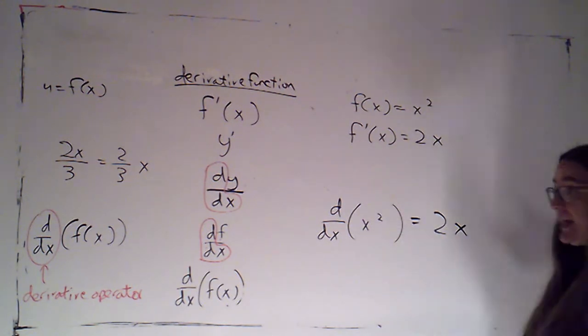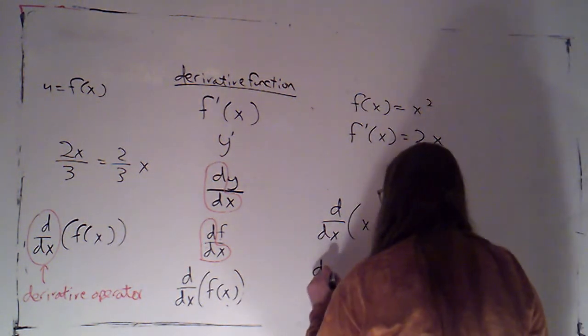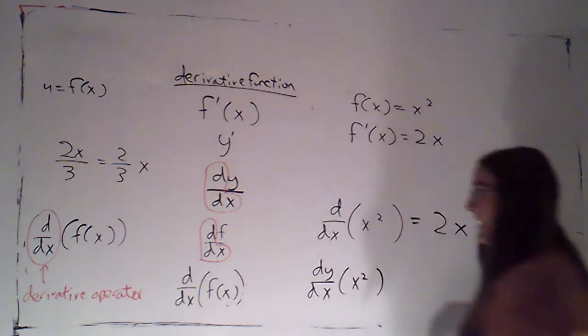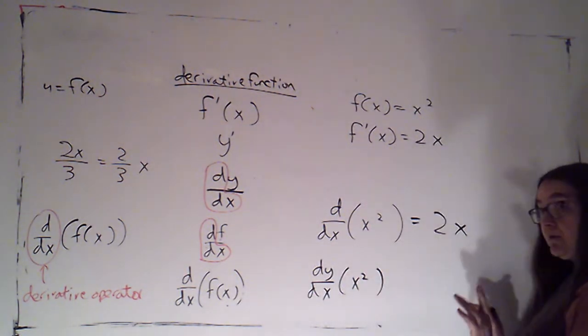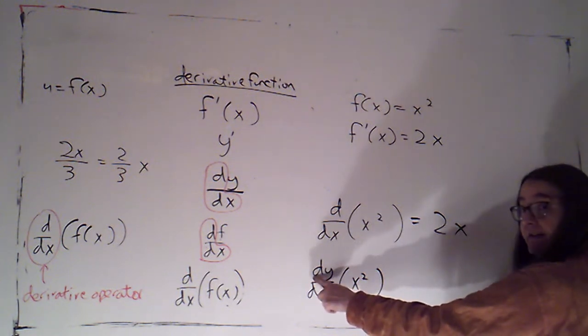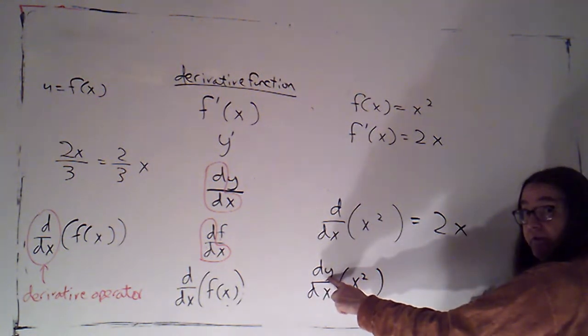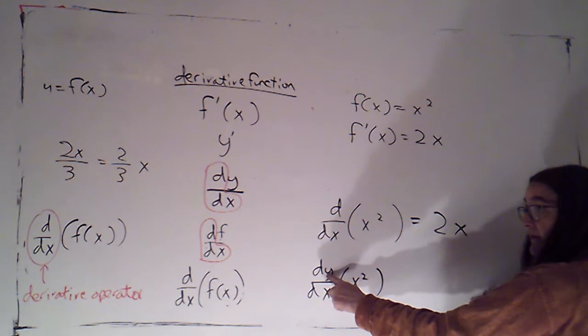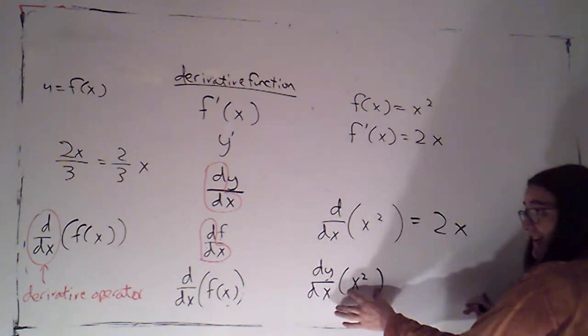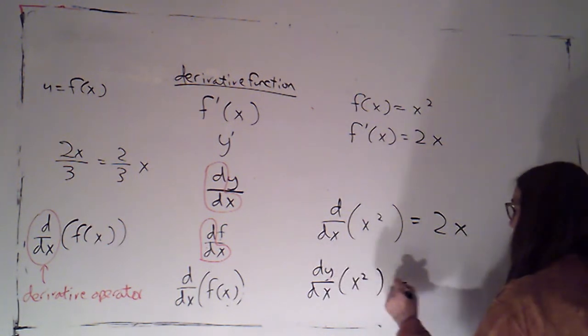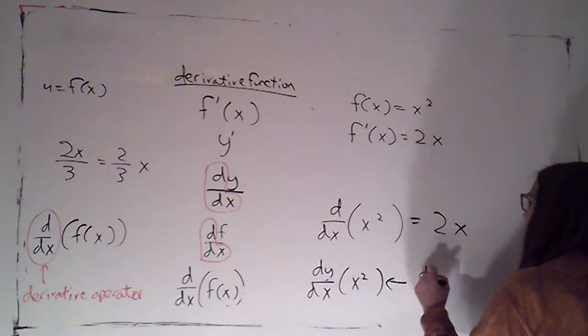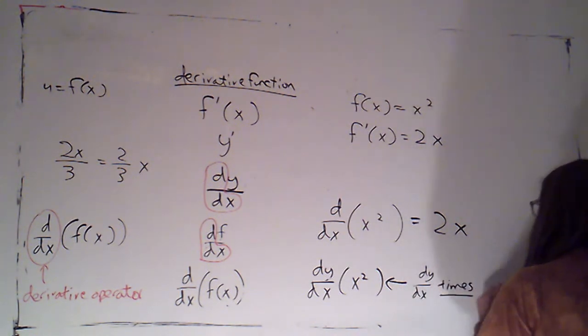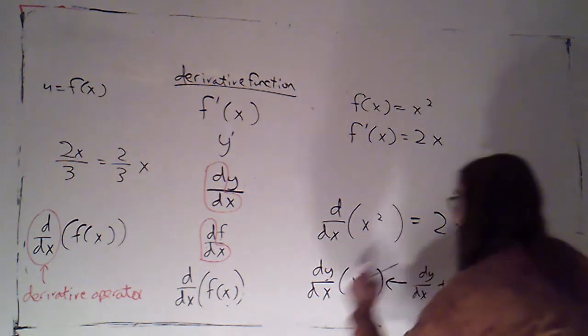One very common notational mistake I see. I'll often see people say dy by dx and then write x squared. Remember, the rule is whatever comes after the d on top is what you're taking the derivative of. So this says I'm taking the derivative of y, not of x squared. This would mean dy by dx, the derivative, times x squared. That's not what I mean.